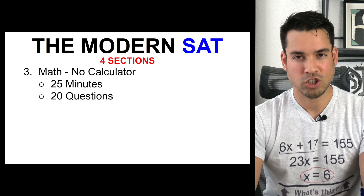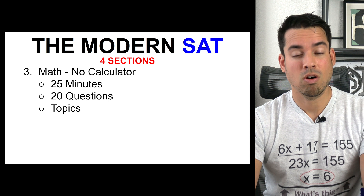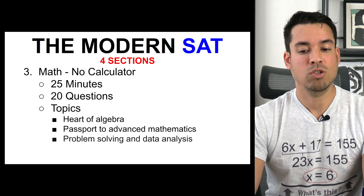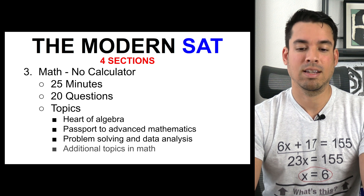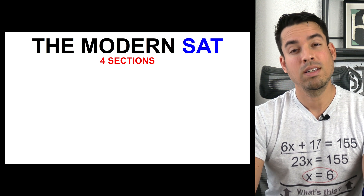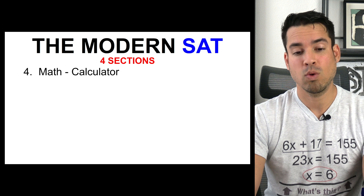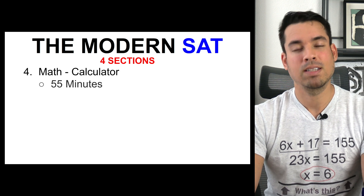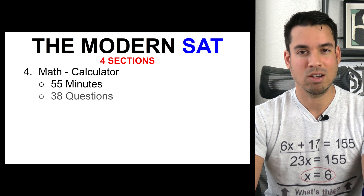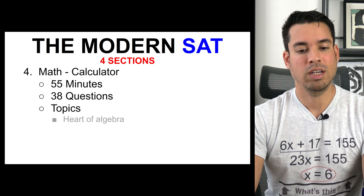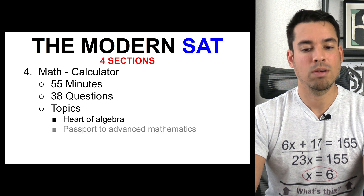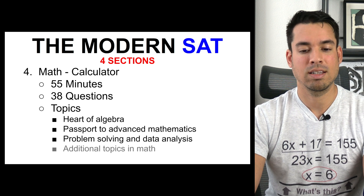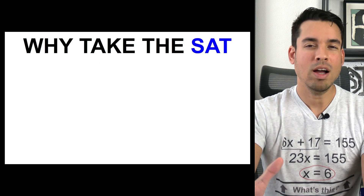Section 3 is a math section where no calculator is allowed. This section is 25 minutes and contains 20 questions. The broad topics are Heart of Algebra, Passport to Advanced Mathematics, Problem Solving and Data Analysis, and Additional Topics in Math. Section 4 is also a math section, but a calculator is allowed. This is a lengthier section — 55 minutes to complete 38 questions — covering the same broad topic areas.